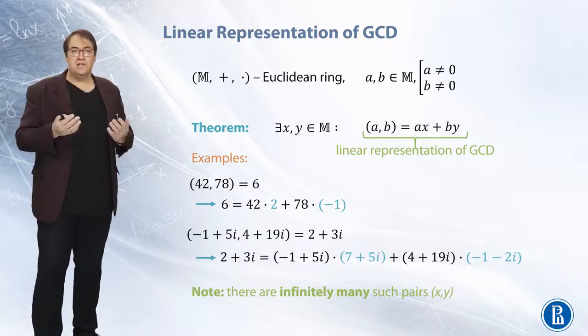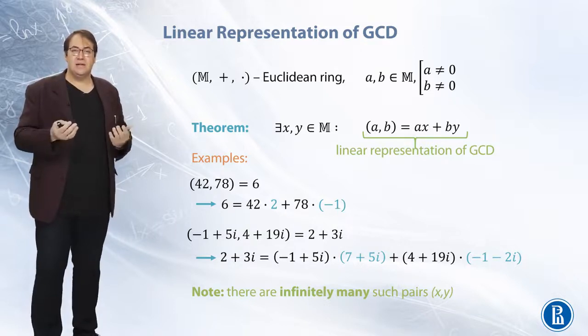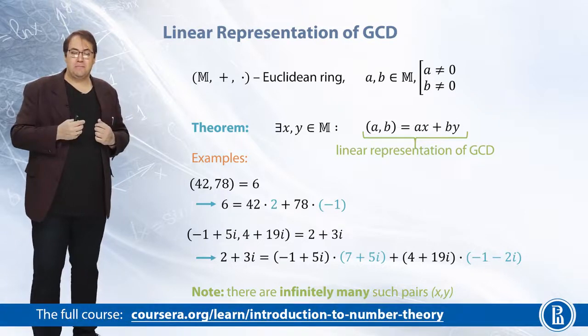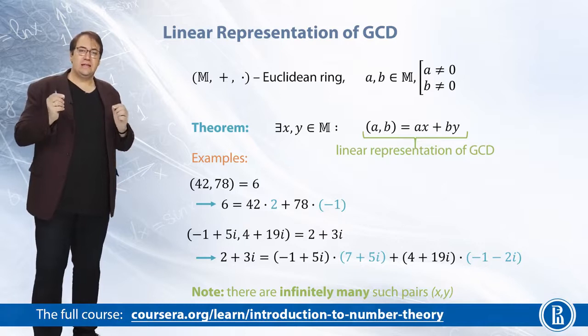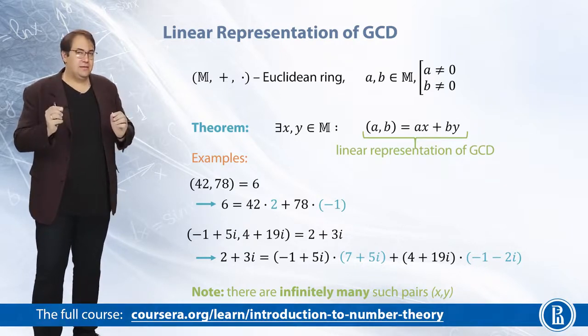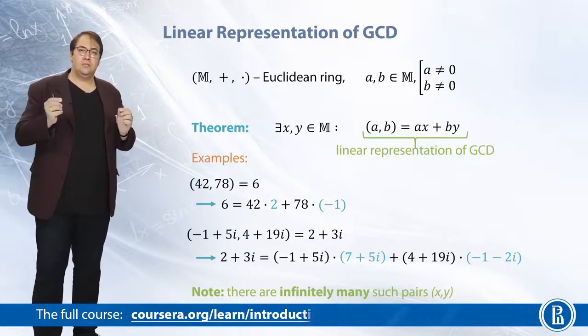Of course, assuming that the ring has infinitely many elements. So once again, all we need is that these x and y exist, not to be unique.